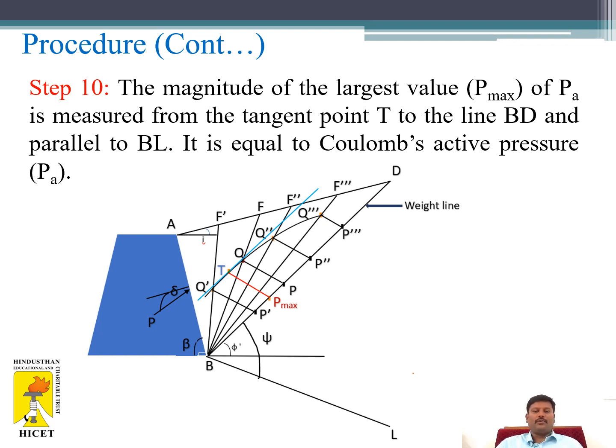The magnitude of the largest value P_max of PA is measured from the tangent point T to the line BD, parallel to BL. It is equal to Coulomb's active earth pressure PA.